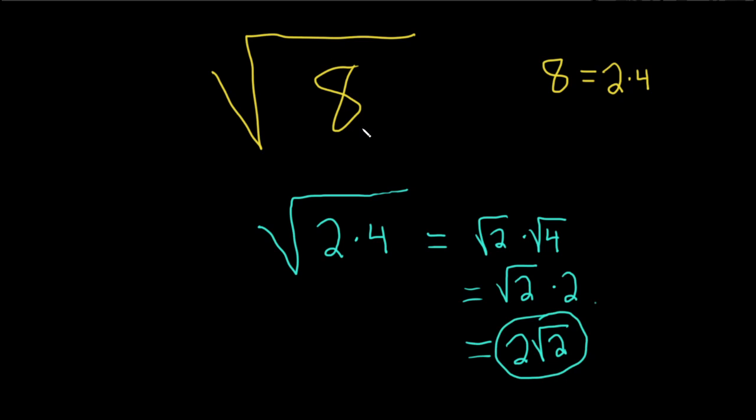So again, when you see a problem like this, you want to just think what's the largest factor of 8 that you can take the square root of and get a whole number? It's called a perfect square. In this case, it's 4. So you factor the number using 4, and then you just break up the square roots and go from there.